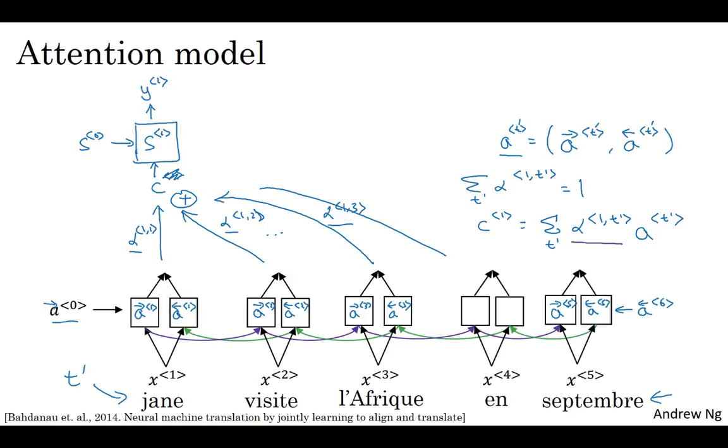More formally, the attention weights will satisfy this, that they'll all be non-negative, and they'll sum to one. We'll see later how to make sure this is true. And we will have that the context at time one is going to be sum over t prime of this weighted sum of these attention, of these activations. alpha t, t prime is the amount of attention that y^<t> should pay to a^<t'>. In other words, when you're generating the t output words, how much should you be paying attention to the t prime input words?